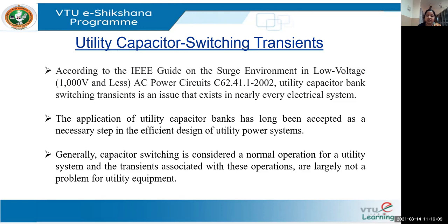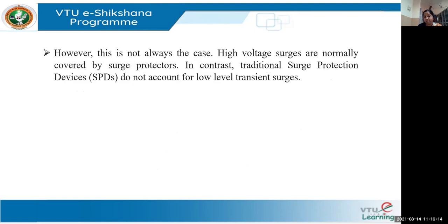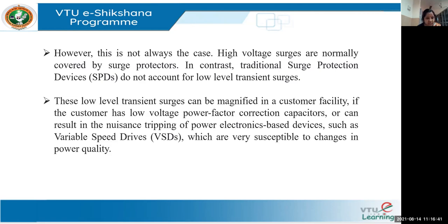Capacitor switching is largely seen at the utility equipment end. When we talk about surge arresters — especially traditional surge arresters — they are not going to be used much at this particular level of transient surges. So we need certain separate solutions, because those kinds of SPDs cannot be used for these kinds of surges.